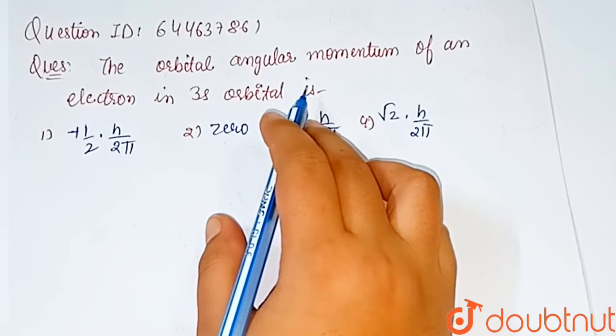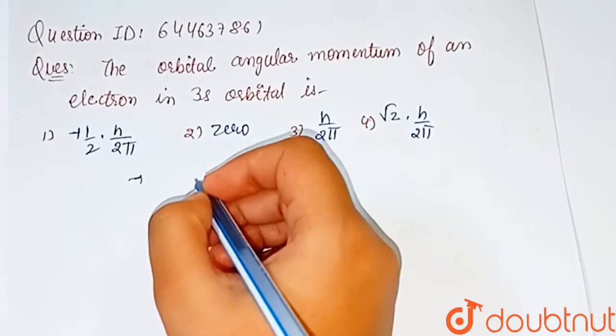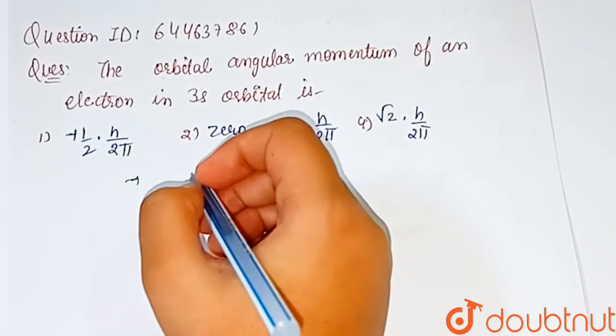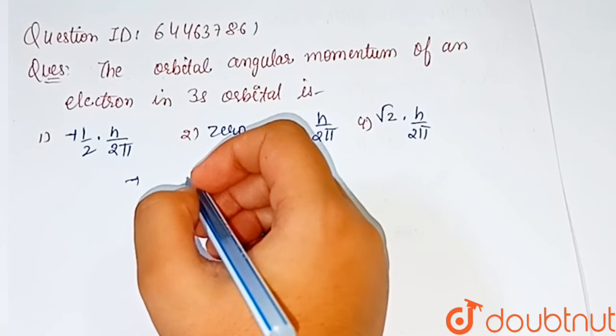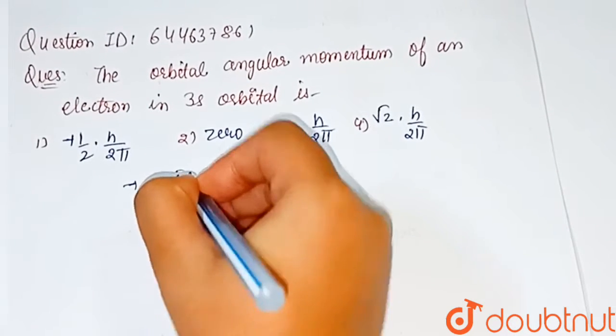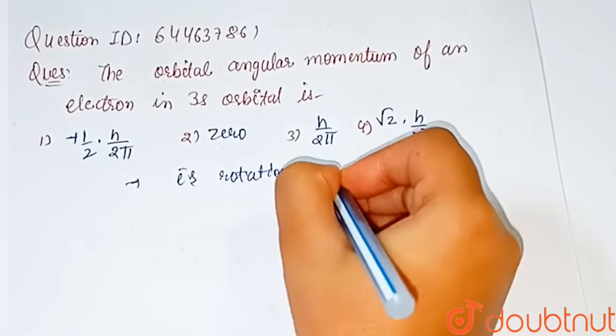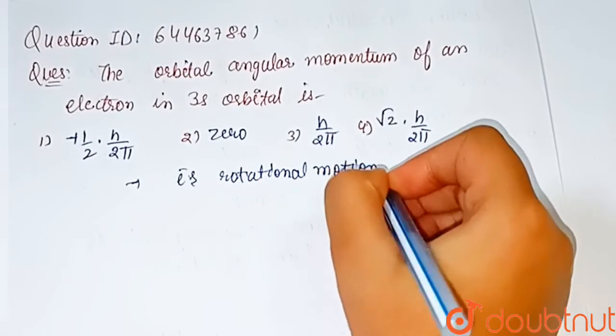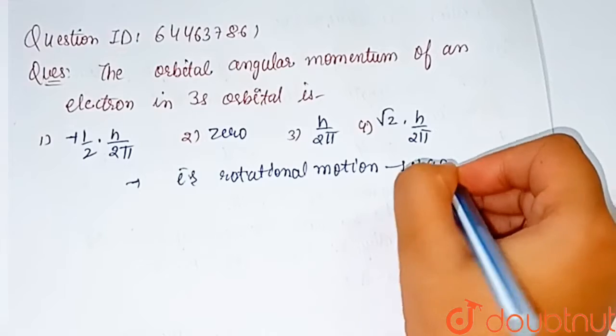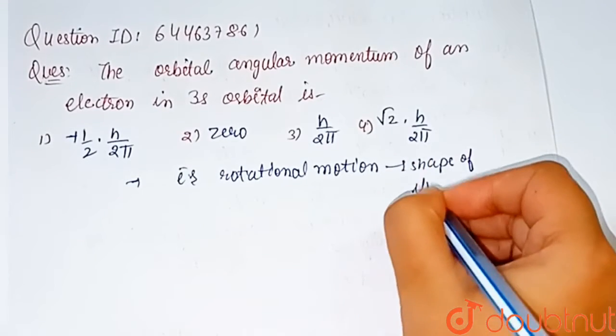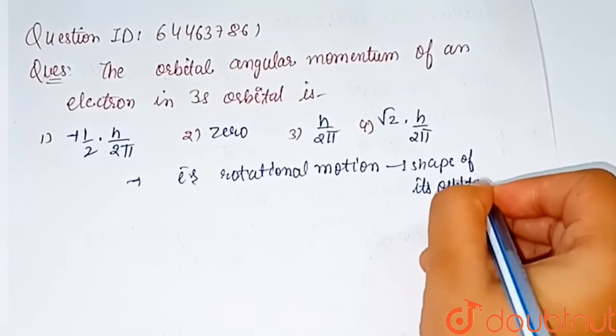First, we know about what is orbital angular momentum. It is a property of an electron's rotational motion that is related to the shape of its orbital.